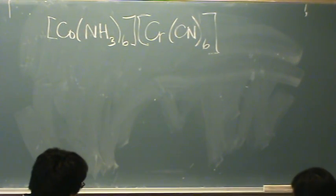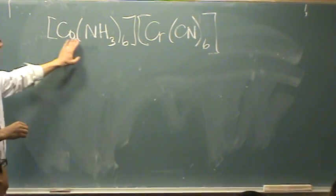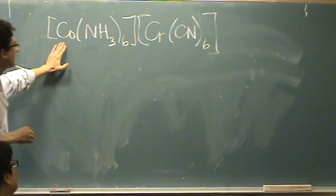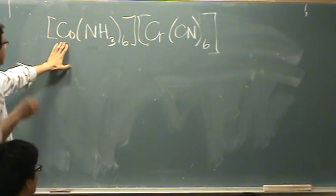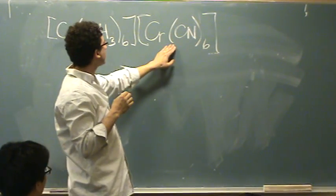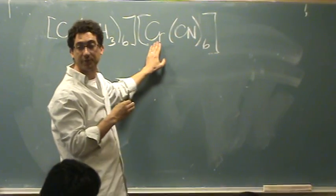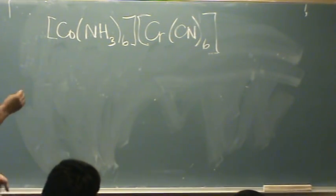Let's try naming this first. This would be hexamine cobalt, well I have to tell you the answer, it would be 3 I believe. And then hexacyanochromate 3. So you have to put an H in its ion. How did I know it was 3?